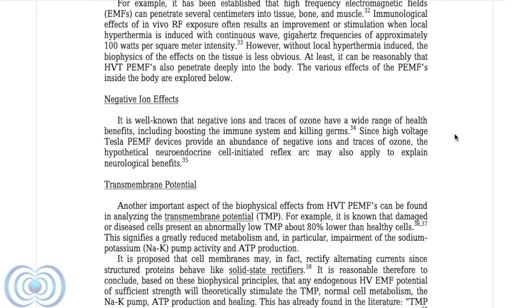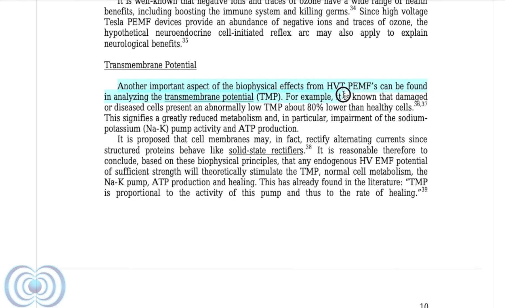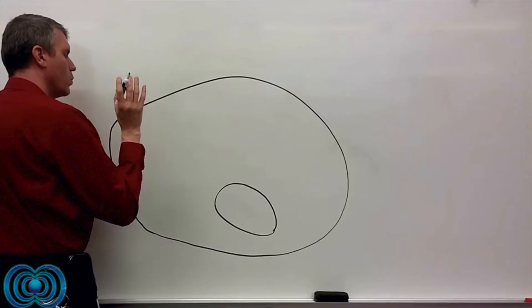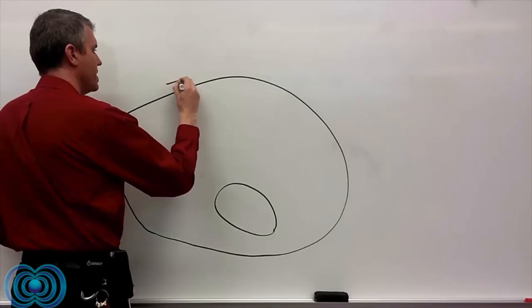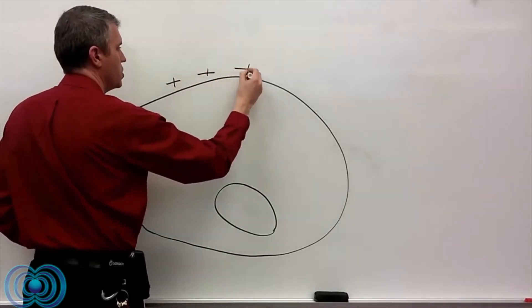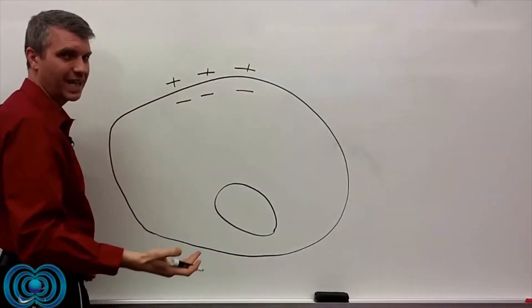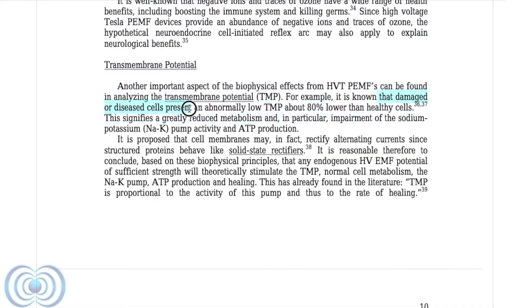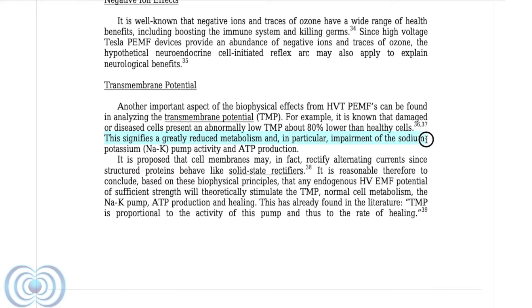Starting on page nine, where it says transmembrane potential, another important aspect of the biophysical effect of PEMF can be found in analyzing the transmembrane potential, the TMP. Remember Dr. Ren in our last video? He taught us about TMP, or transmembrane potential. When we're talking about membrane potentials, here's the basics of what we mean. There's a charge across this outside membrane, a literal electrical charge. For example, it is known that damaged or diseased cells present an abnormally low TMP, about 80% lower than healthy cells. This signifies a greatly reduced metabolism, and in particular, impairment in the sodium-potassium pump activity and the ATP production.